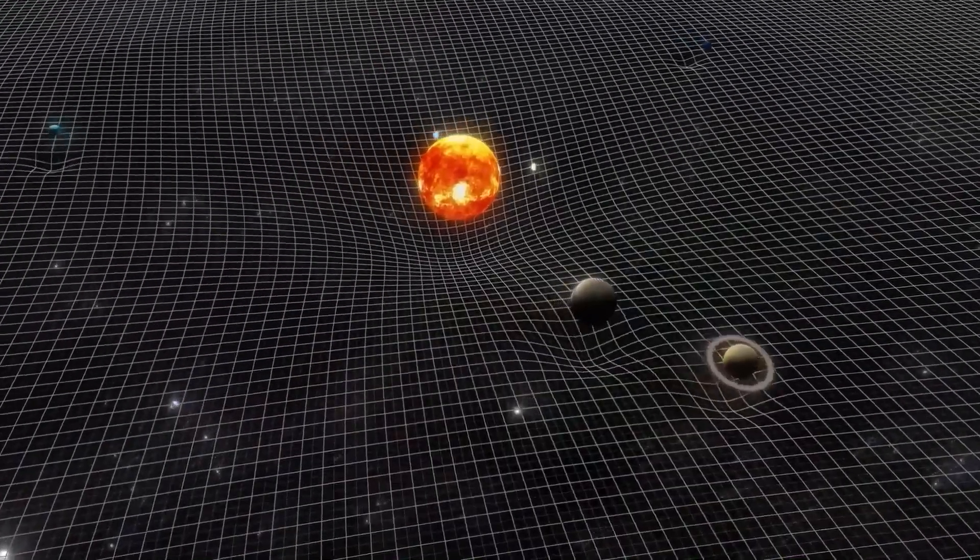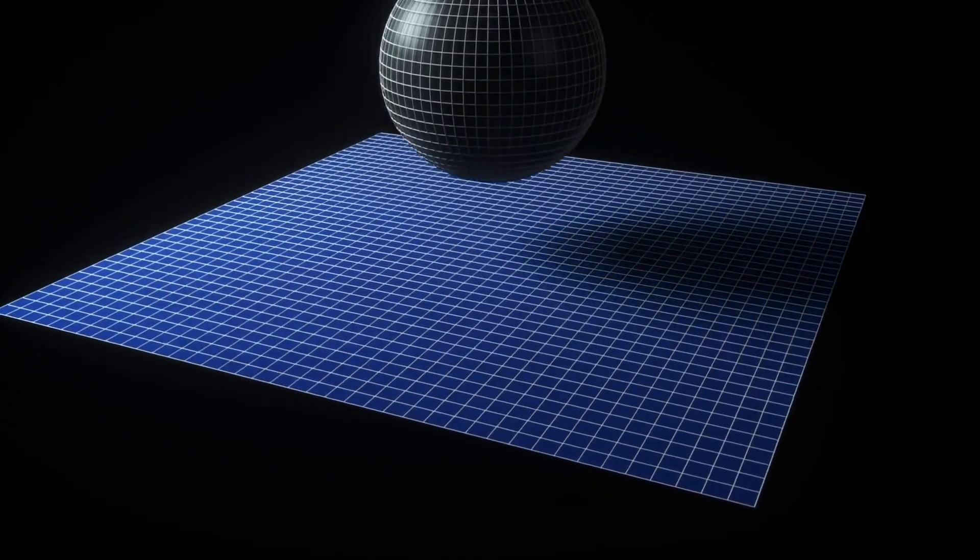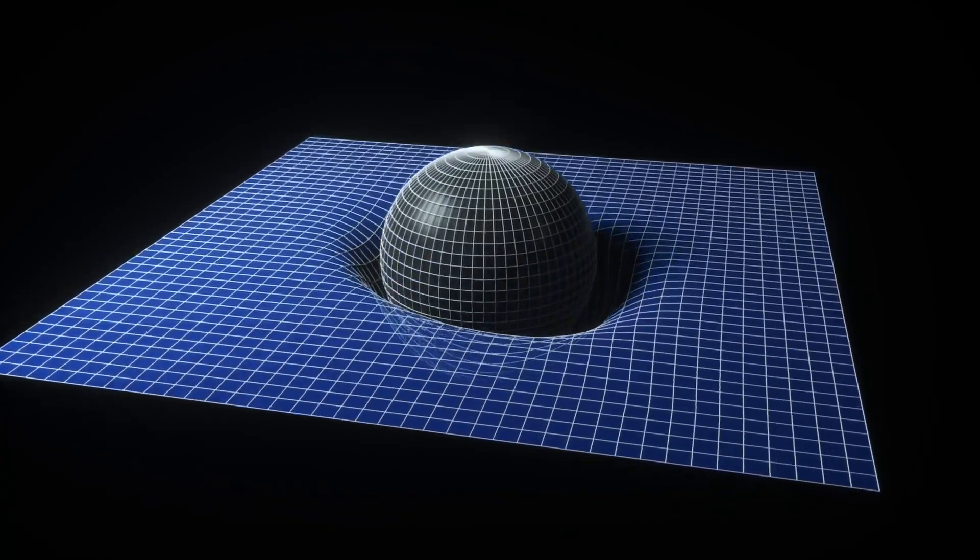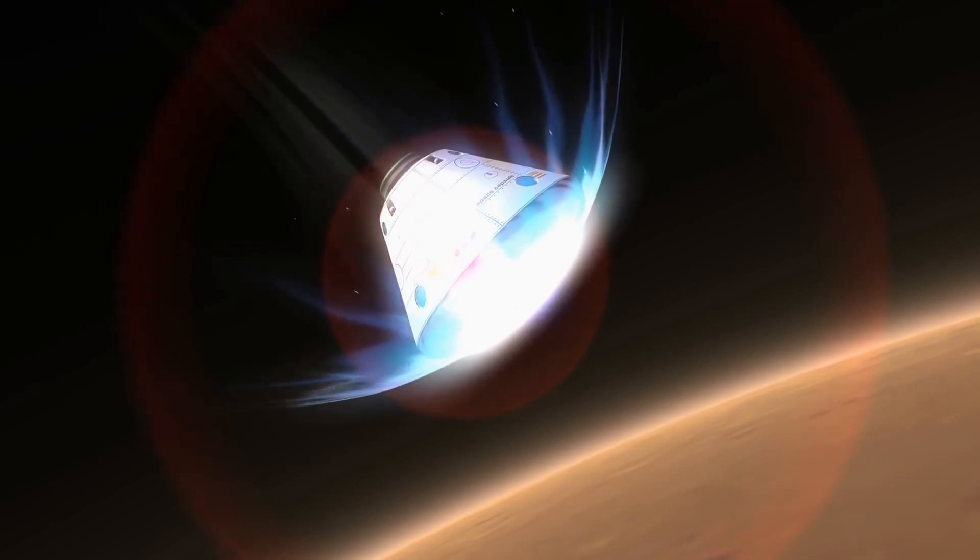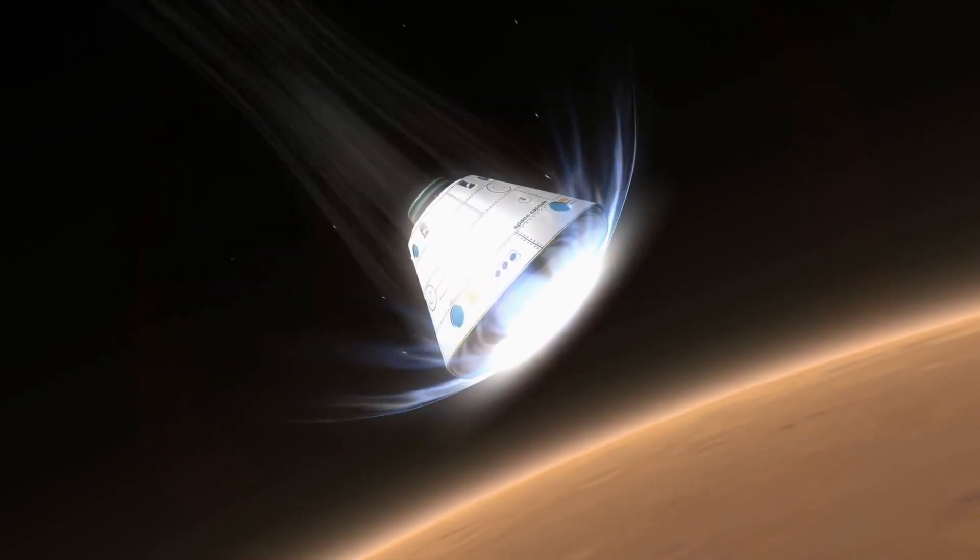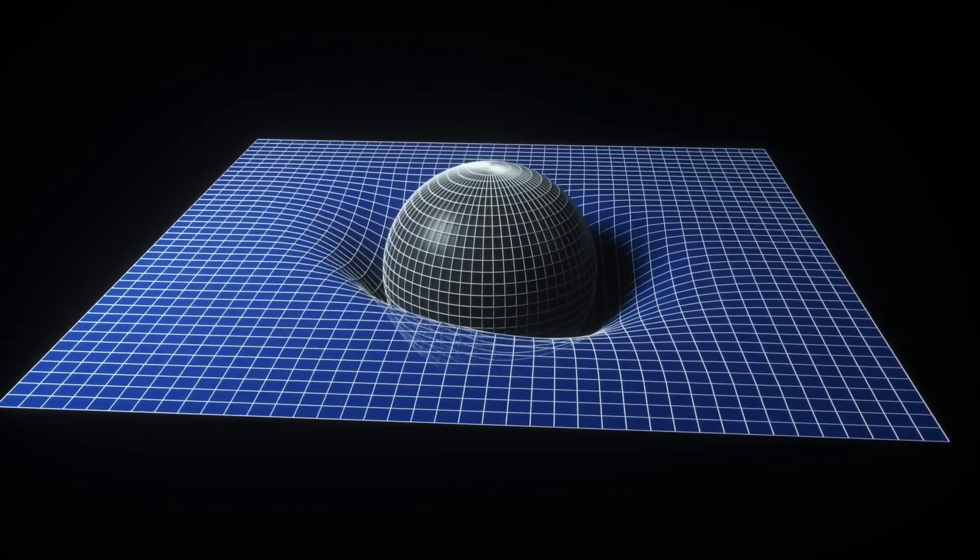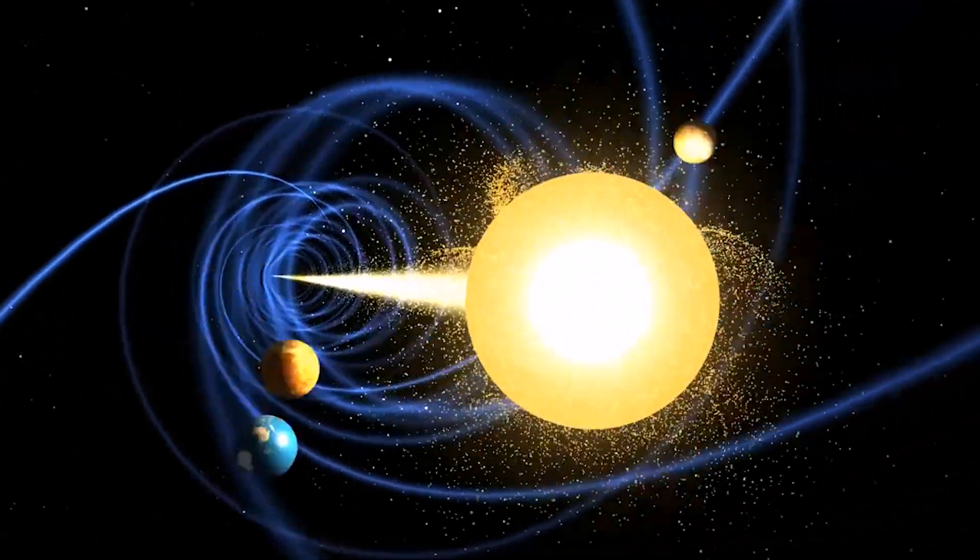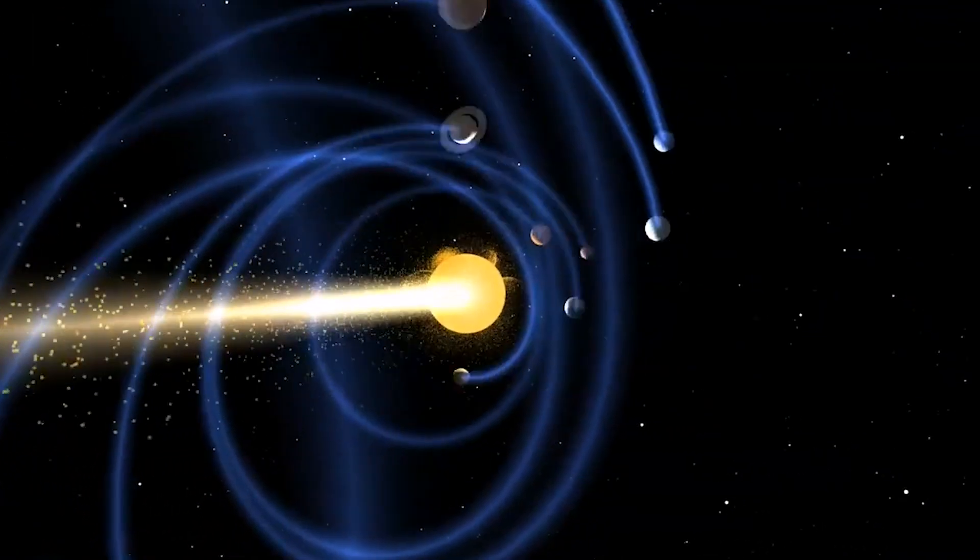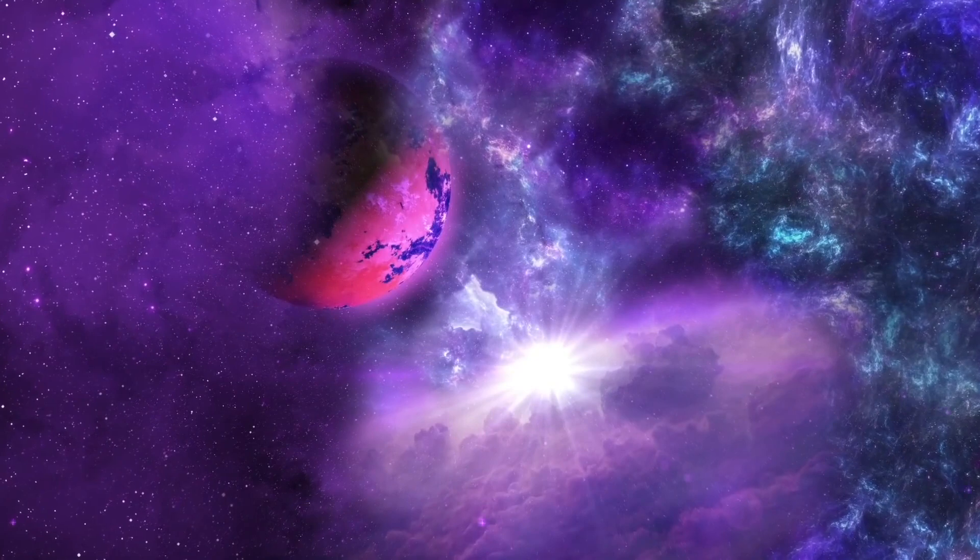However, when a mass like a star or planet is present, it causes the fabric to curve, much like a heavy ball placed on a trampoline. The greater the mass, the more space-time curves. This curvature influences the movement of objects. In the absence of other forces, objects move along the straightest possible paths in this curved space-time, which are called geodesics. When a planet orbits a star, it's not being pulled by the star—it's following the curved space-time created by the star's mass.